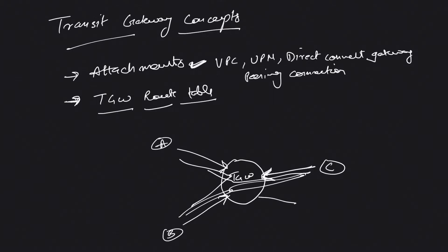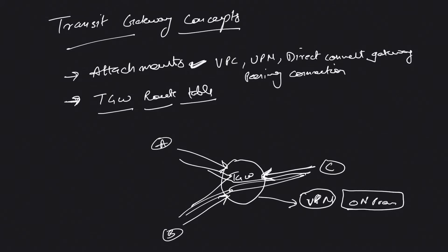Another advantage is that Transit Gateway supports not just VPC attachments but also VPN connections from your on-premises environment. If you remember from our last video, we did a site-to-site VPN, and there were two options — Virtual Private Gateway and Transit Gateway. That's what Transit Gateway can do. Let's now go into the AWS console and create one.